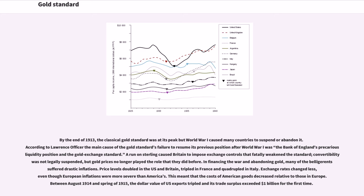In financing the war and abandoning gold, many of the belligerents suffered drastic inflations. Price levels doubled in the US and Britain, tripled in France, and quadrupled in Italy. Exchange rates changed less, even though European inflations were more severe than America's. This meant that the costs of American goods decreased relative to those in Europe. Between August 1914 and spring of 1915, the dollar value of US exports tripled and its trade surplus exceeded $1 billion for the first time.